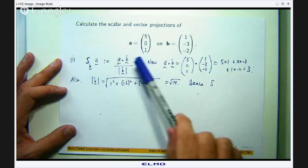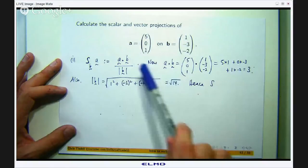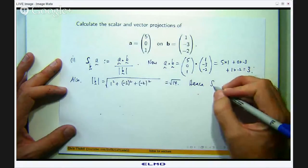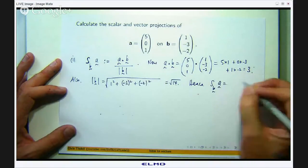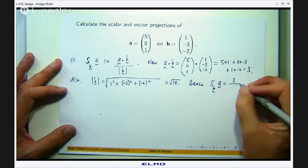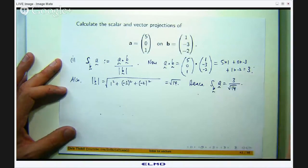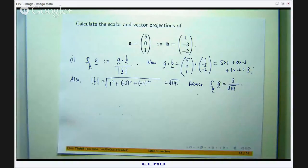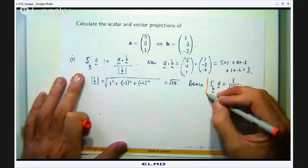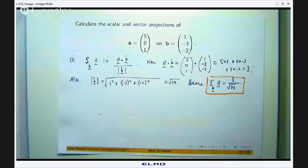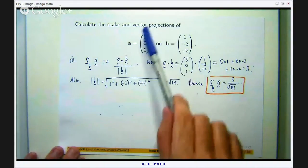I will just take the dot product which is over here, divide it by the length and I will have my scalar projection. That is pretty easy.